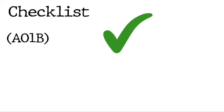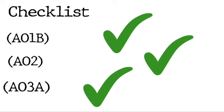I would see it as a checklist of assessment objectives that you're trying to achieve to guarantee and maximise those 3 marks. One of the most important assessment objectives on this particular question is AO1B, which looks at your knowledge and understanding. Without AO1B you cannot achieve AO2 or AO3A. If you've shown that knowledge and understanding, then you can look to achieve AO2, which is application, and AO3A, which is analysis.